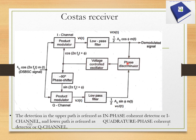The phase discriminator consists of a multiplier as well as a low pass filter. It produces a DC signal which acts as a control signal for the VCO to maintain the phase synchronism.